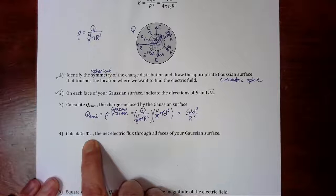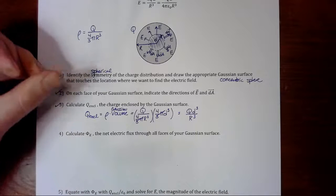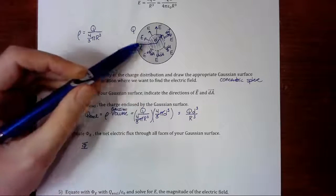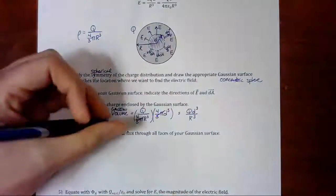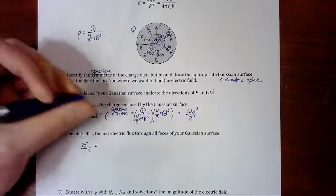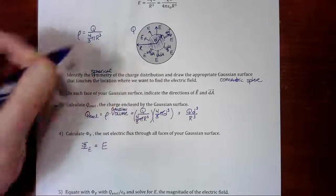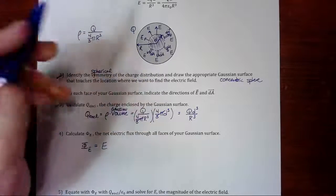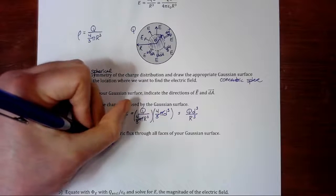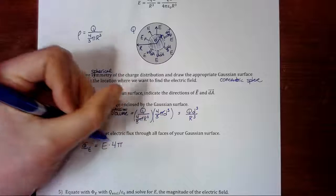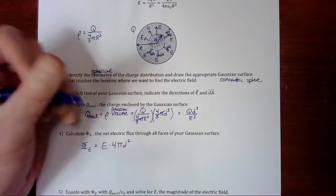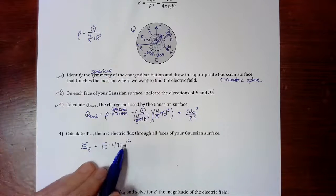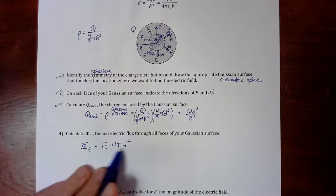Calculate the net flux through all faces of our surface. So the flux - we only have one face because it's a sphere. So that is going to be the electric field, it's the same everywhere along the surface of the sphere, times the surface area of our Gaussian sphere. The surface area of our Gaussian sphere is 4π d². Because the radius of our Gaussian sphere is d, so 4π d². So there's our flux right there, E times 4π d².